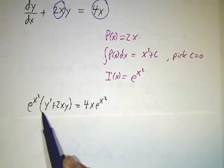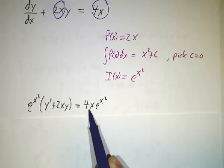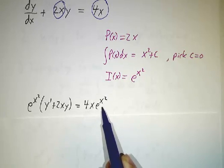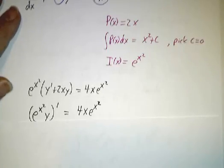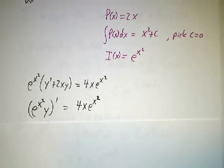So e to the x squared times y' plus 2xy is 4x e to the x squared. The left-hand side is the derivative of e to the x squared y.